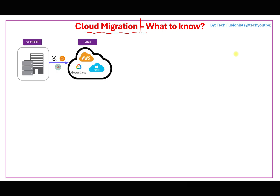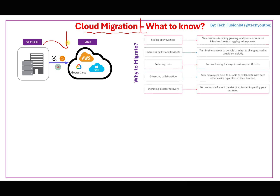When talking about cloud migration, the first thing to consider is why we need to migrate. One key reason is scalability — for example, right now you may have only thousands of users, but if you expect ten thousands of users next month, you want to increase resources quickly, which is very easy in the cloud.